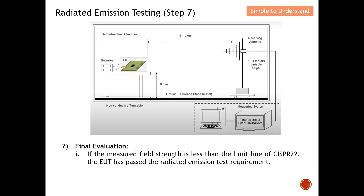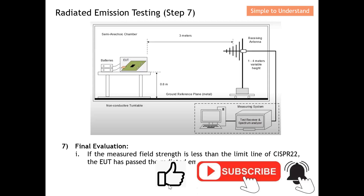Step 7: Final evaluation. If the measured field strength is less than the limit line of CISPR 22 after the detailed scan, you can conclude that your EUT has passed the Radiated Emission test requirement. This completes the step-by-step procedure for Radiated Emission testing.